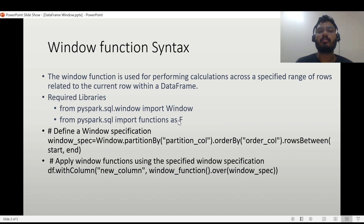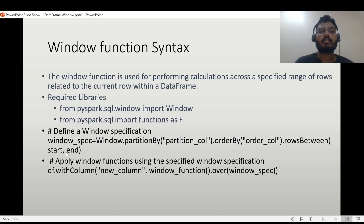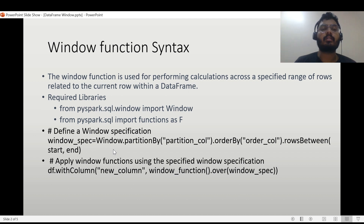The syntax requires us to first define the window specification by creating a Window object: Window.partitionBy() with one or more partition columns, then orderBy() with one or more columns, and rowsBetween() where start and end can be unboundedPreceding, unboundedFollowing, currentRow, or any numeric value. We'll look at examples of this, and also in upcoming videos where I'll be creating a series on interview hands-on questions covering this in more detail.